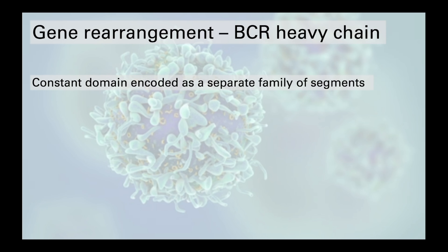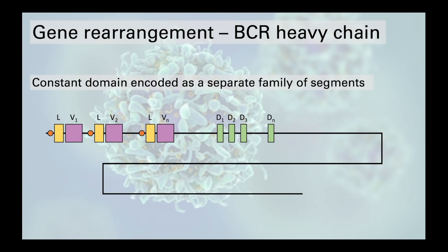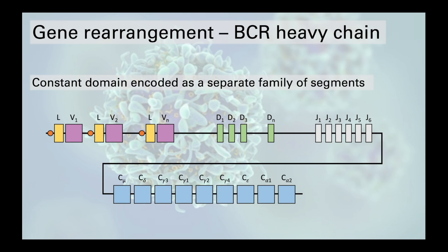Let's examine this process in more detail using the heavy chain of the B cell receptor as an example, bearing in mind that the process is the same in T cells and occurs during the developmental stage of cell maturation in the bone marrow or thymus. The gene encoding the variable domain of the heavy chain is made up of three families of genes: V, D, and J, which stand for variable, diversity, and joining. The constant region is then encoded as a separate region made up of multiple segments.